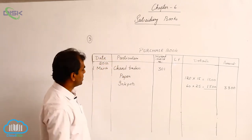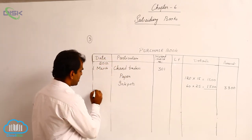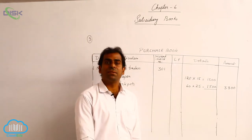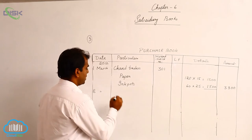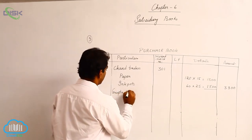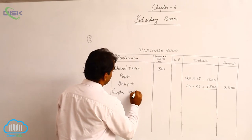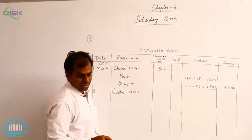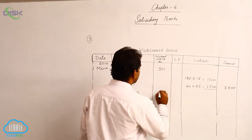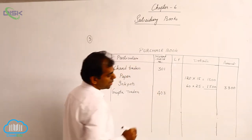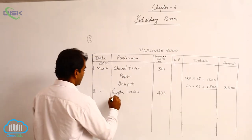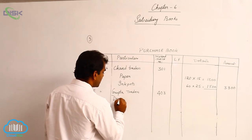Next transaction is on 8th March. You are buying on 8th March from Gupta Traders. So Gupta Traders, and the invoice number is 403. What you are buying from Gupta Traders? 10 drawing boards.